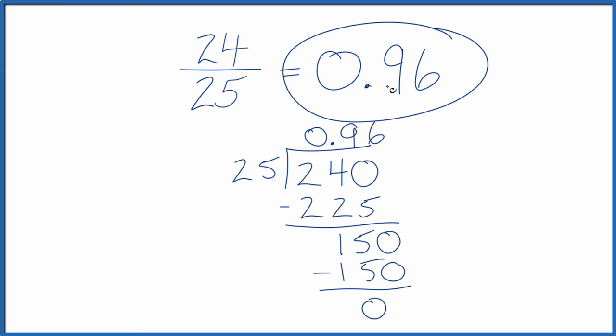And that's what we found up here earlier. So the fraction 24/25 is equal to the decimal 0.96. This is Dr. B. Thanks for watchin'.